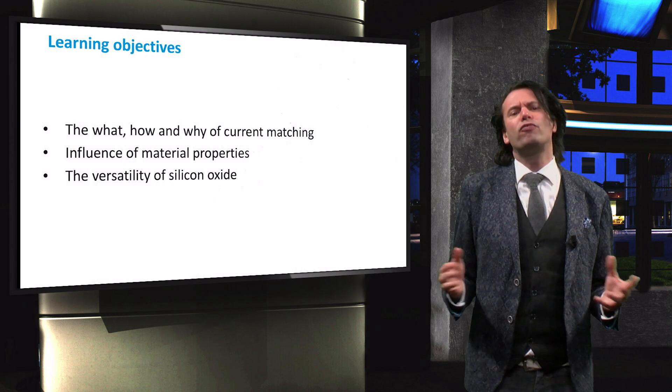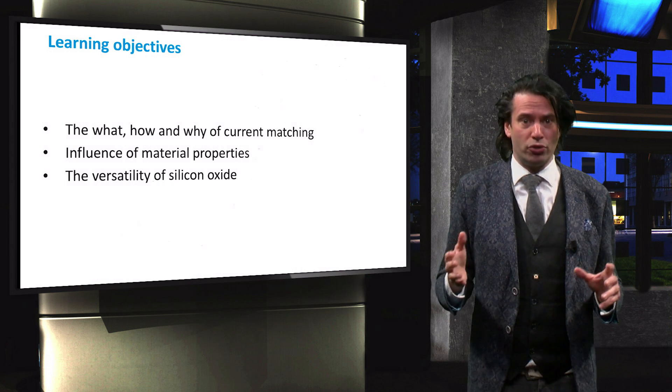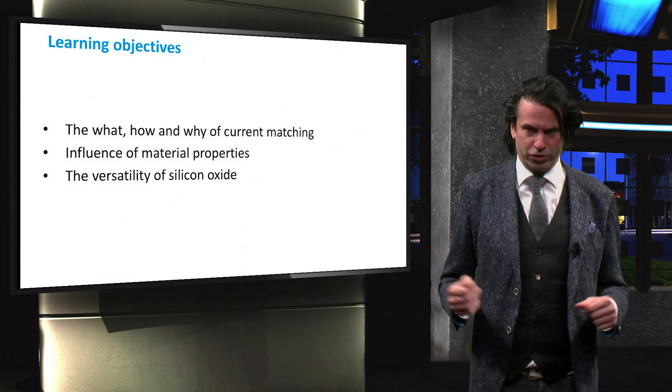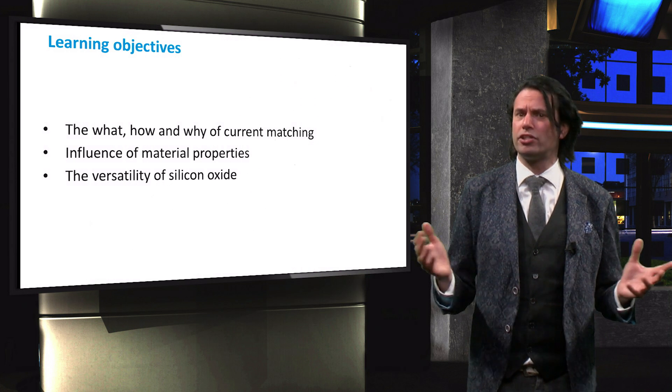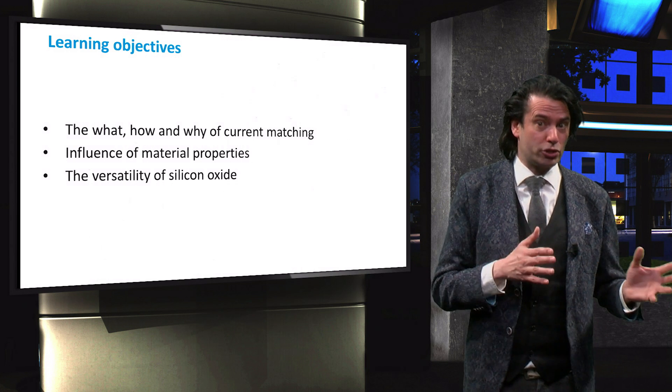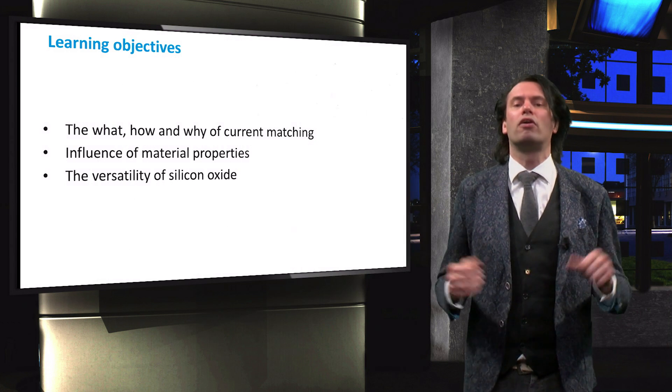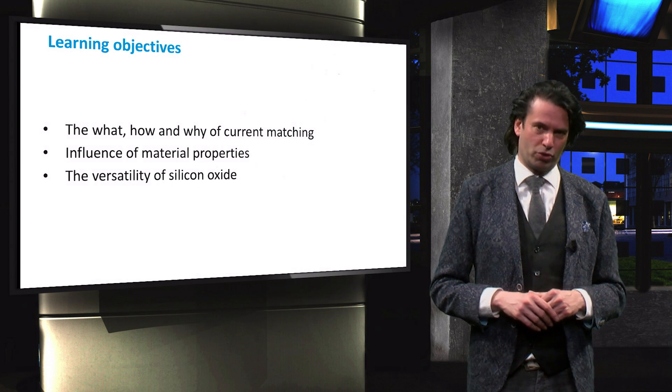We will look at the influence of certain material properties on current matching effectiveness. Finally, we'll look at silicon oxide, which is a versatile material that is used for, besides current matching, a number of applications in thin-film solar cells.